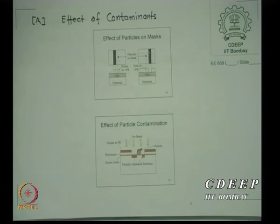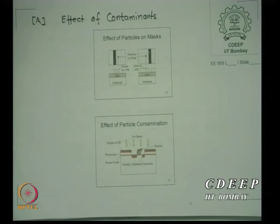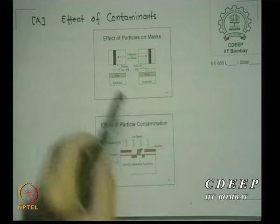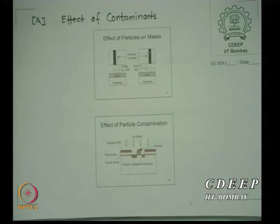Here are two diagrams. There is something called a mask — which we have not yet discussed — either a glass plate or some other form on which a pattern is created. It is like a photo plate on which some regions are white and some are black. What happens is: here is a mask plate which has a certain region black. So if I have a film over which photo resist is coated — when it receives light, it either becomes hard or soft depending on whether it is positive or negative resist.